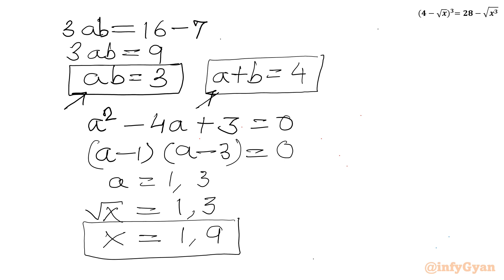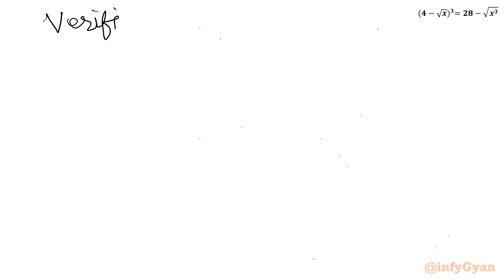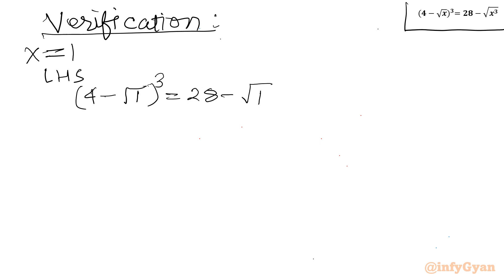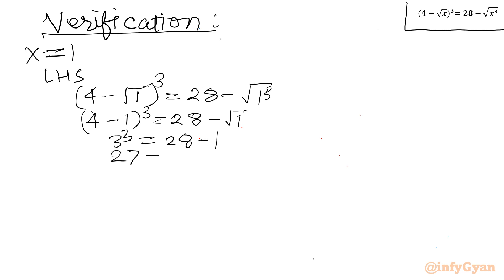Now it's time for verification. For x = 1, substituting into the original equation: LHS = (4 - √1)³ = (4 - 1)³ = 3³ = 27. RHS = 28 - (√1)³ = 28 - 1 = 27. Since 27 = 27, x = 1 is a verified solution.